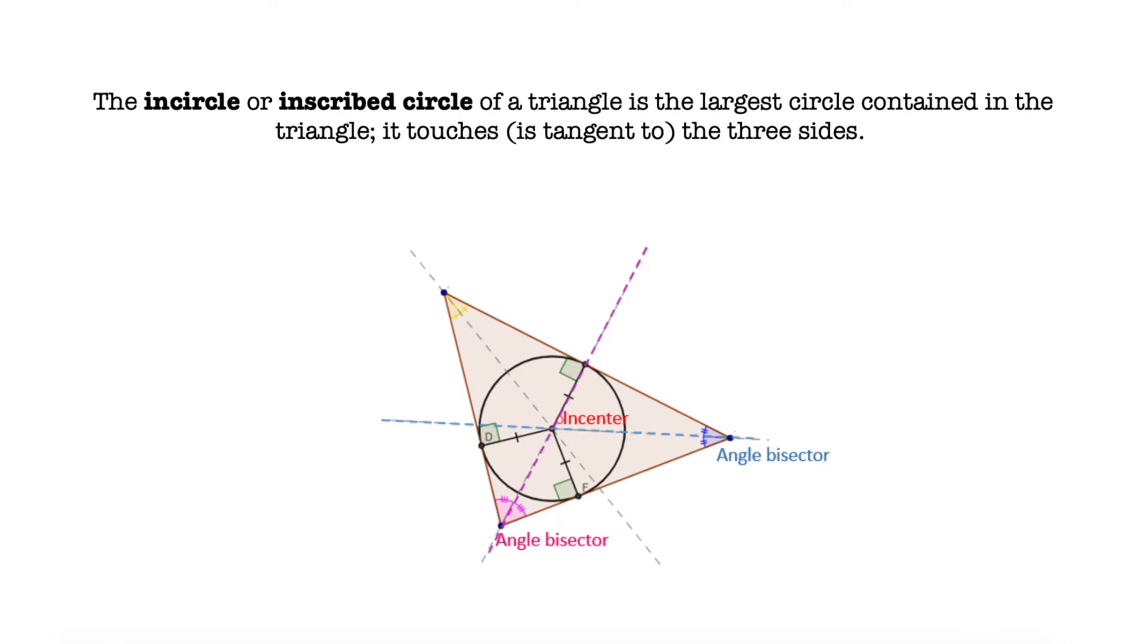The incenter is the middle point of a circle called the incircle or inscribed circle, that is the largest circle contained in the triangle. It touches the three sides of that triangle.